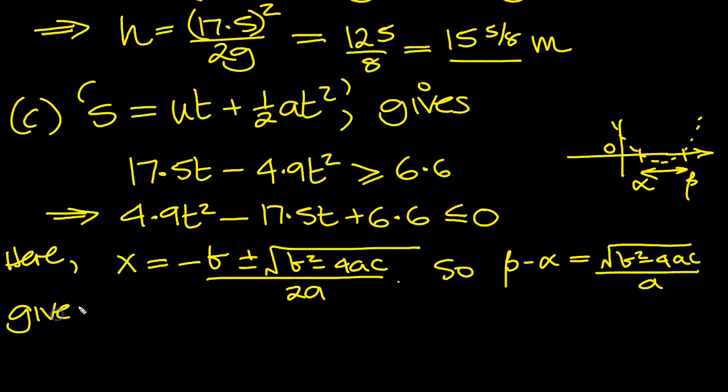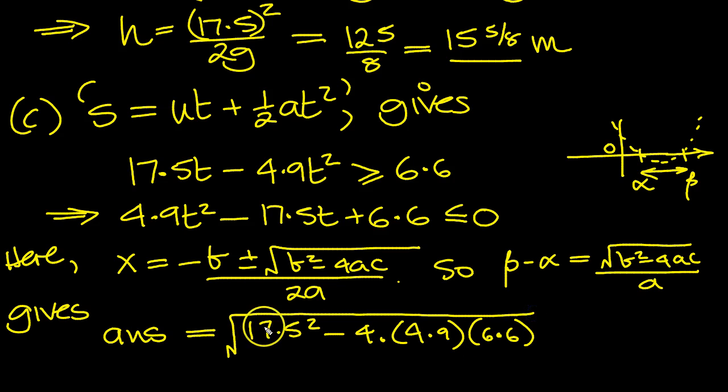So this gives answer equal to b squared is 17.5 squared minus 4 times a, 4.9, times c, is 6.6, square rooted. So b squared minus 4 times a times c all over a, which is 4.9.